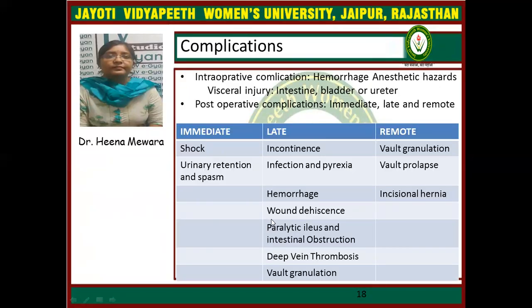Now, complications. Intraoperative complications are hemorrhage, anesthetic hazard, and visceral injuries to the intestine, bladder, or ureter. Postoperative complications are divided into three parts: immediate, late, and remote. Immediate complications include shock, urinary retention, and spasm. Late complications are incontinence, infection and pyrexia, hemorrhage, wound dehiscence, paralytic ileus and intestinal obstruction, deep vein thrombosis, and vault granulation. Remote complications are vault granulation, vault prolapse, and incisional hernia.